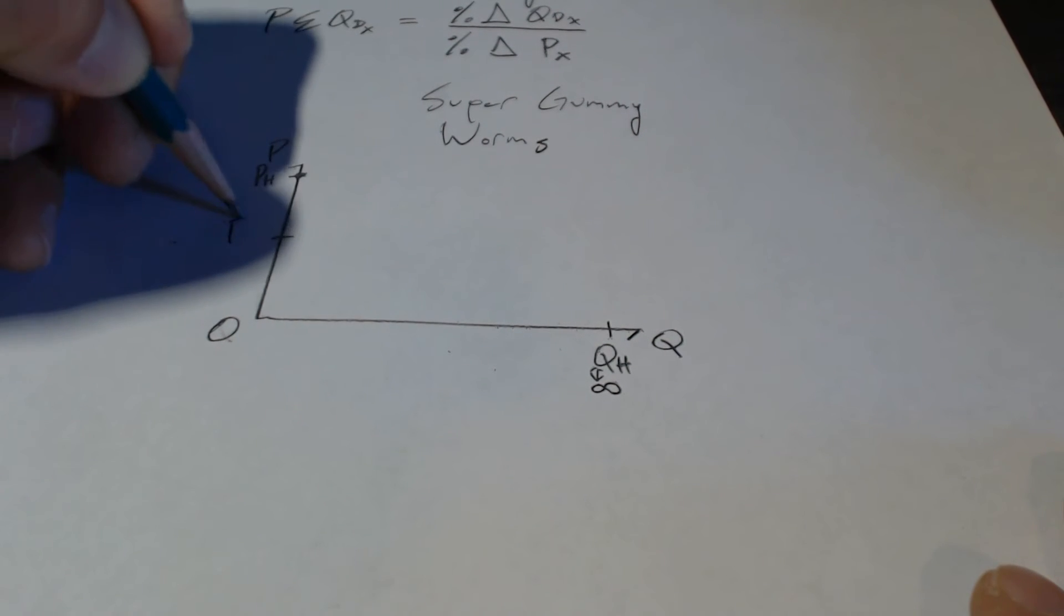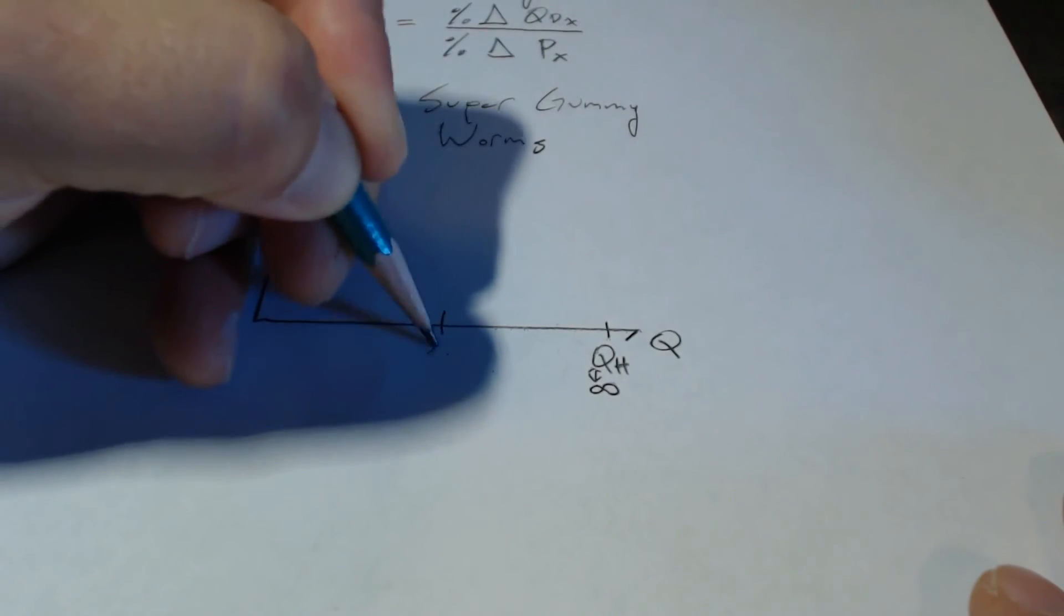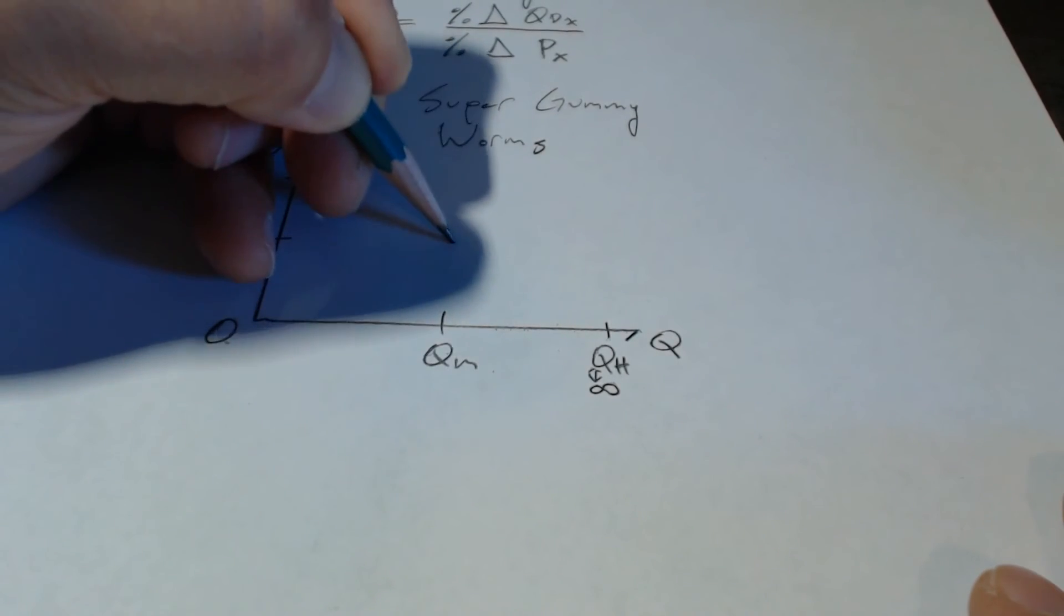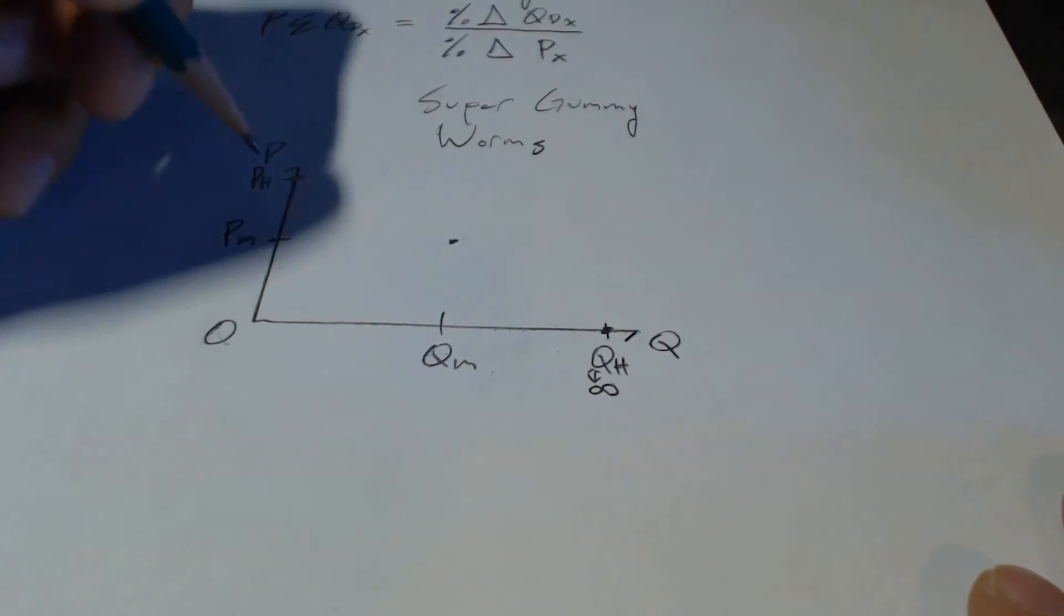What if we charge somewhere in between? Well, P medium, I don't know, some medium quantity of people. So, you see what's going on here?